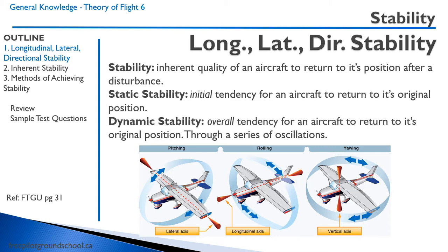We can describe stability along three axes. Longitudinal stability is around the lateral axis, so the aircraft pitches up, then pitches down and returns to its original position. Lateral stability is stability about the longitudinal axis — if one wing gets forced up by a gust of wind, it will return to its position. Directional stability is stability around the vertical axis, so left and right, when an aircraft yaws to the left and to the right.